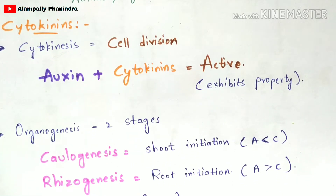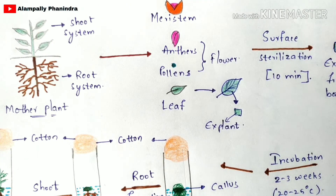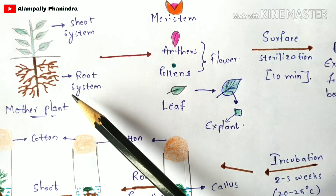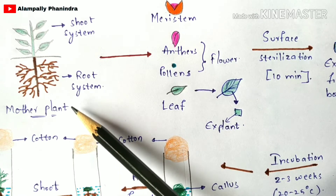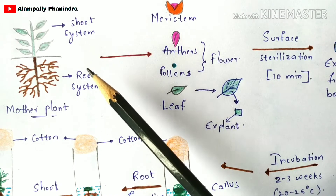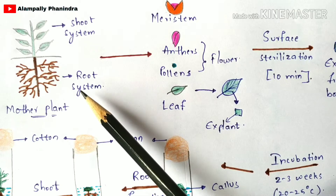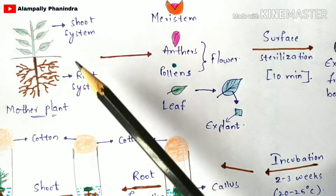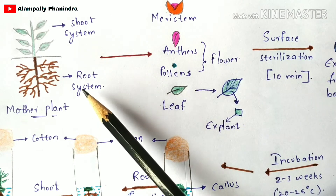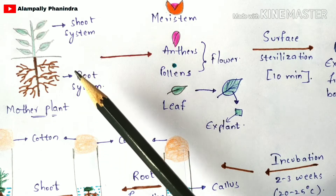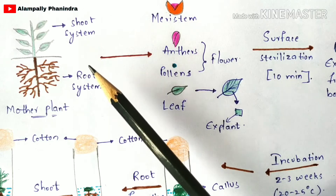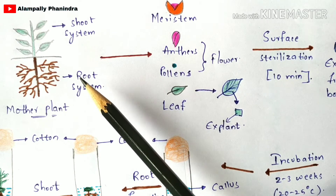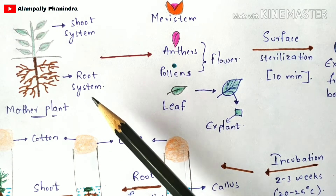Now let us see the diagrammatic procedure of organogenesis culture. In any type of plant tissue culture method, the first step is selection of the mother plant. The mother plant should be mature and well-developed, meaning the root system as well as the shoot system should be completely developed. The root system is the region below the soil, and the shoot system is the region above the soil, which includes stem, leaves, fruits, and flowers.